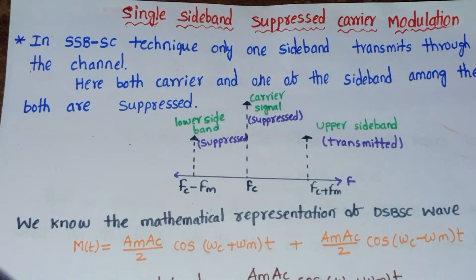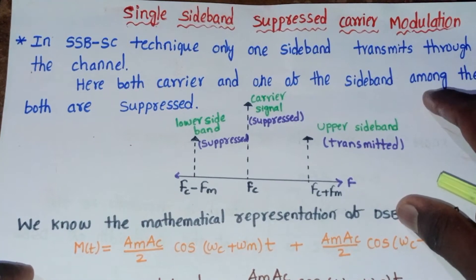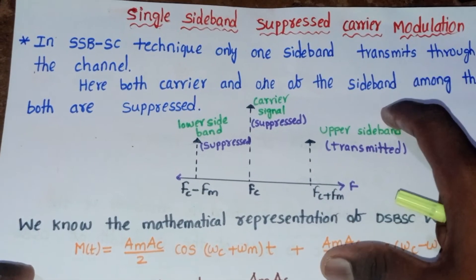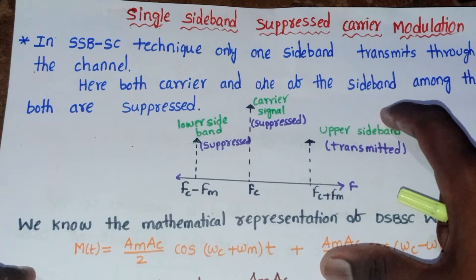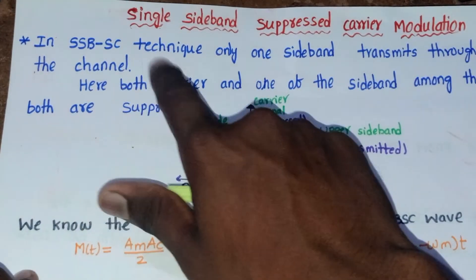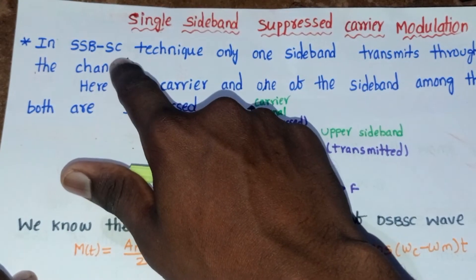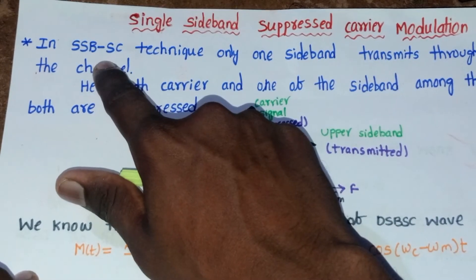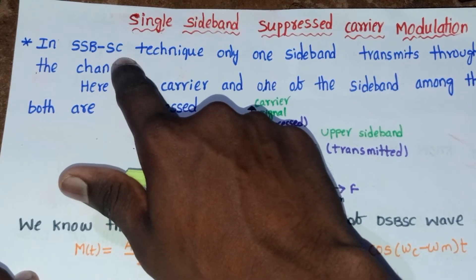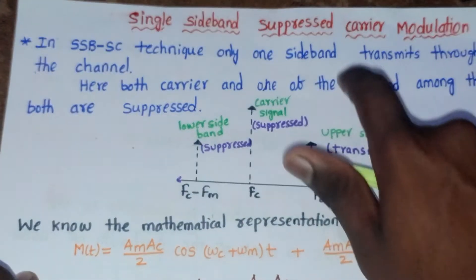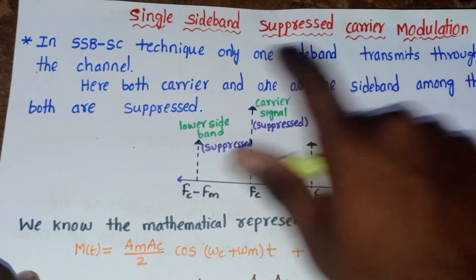Hello friends, in this video we are going to discuss Single Sideband Suppressed Carrier modulation, which is one of the classifications of amplitude modulation techniques. SSB, also known as SSB-SC (Single Sideband Suppressed Carrier), is the technique where only one sideband is transmitted through the channel.